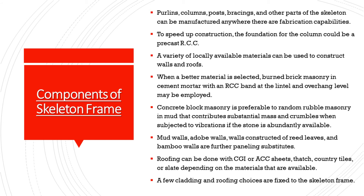Components of a skeleton frame — purlins, columns, posts, bracings, and other parts of the skeleton — can be manufactured anywhere there are fabrication capabilities, to speed up construction. The foundation for the column could be a precast RCC. A variety of locally available materials can be used to construct walls and roofs.